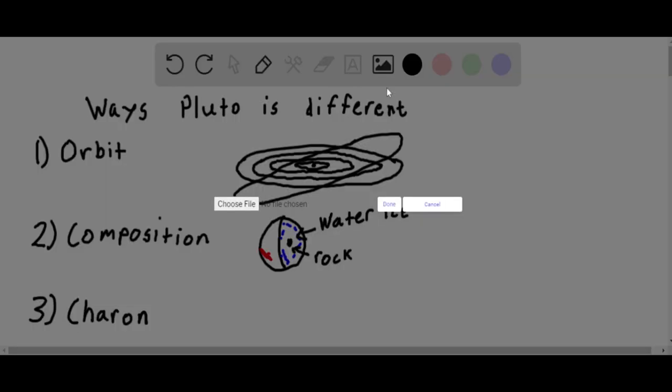One other thing that makes Pluto different from the eight major planets is its largest moon, Charon. If we look at a picture of Pluto and Charon from the New Horizons spacecraft, we can see how close in size they are.